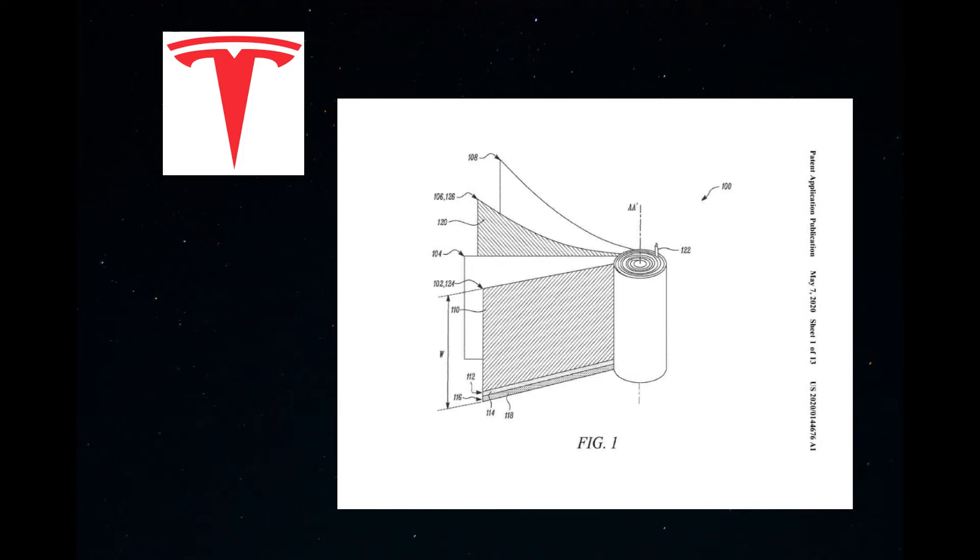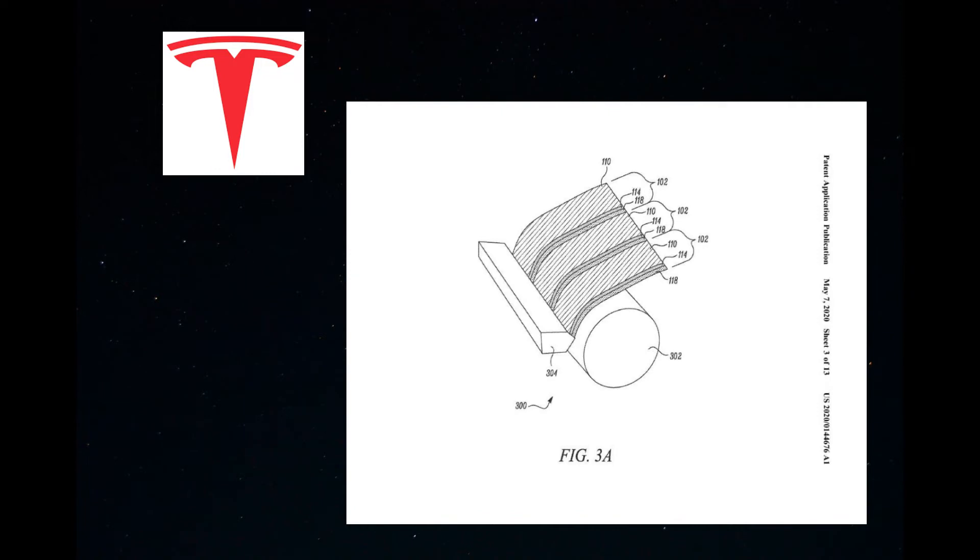The tapless electrode technology negates the use of a tap to make the positive-negative connection by instead using two substrates, one of which has a conductive edge.